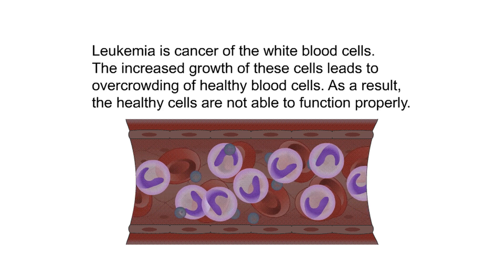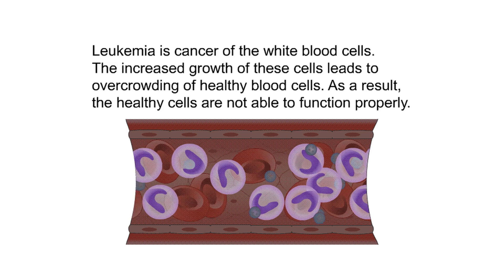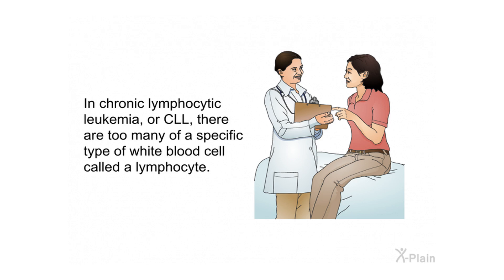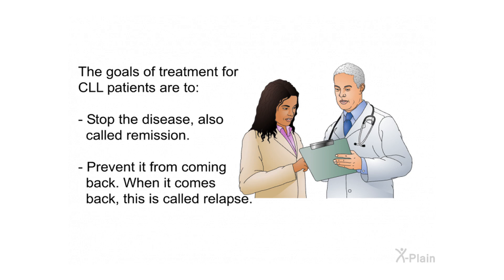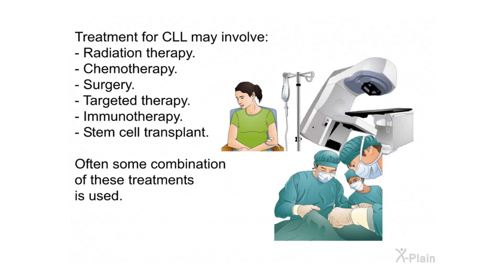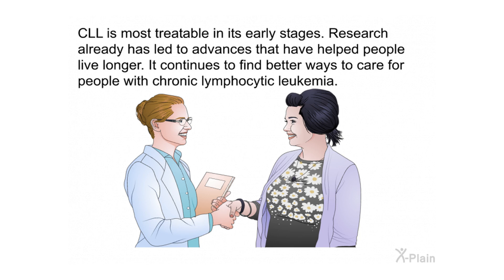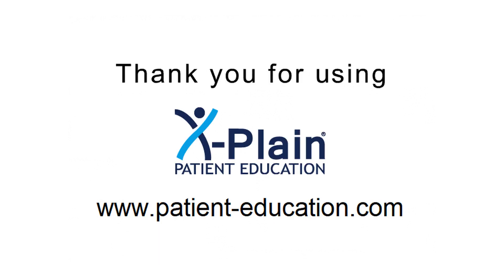In summary: leukemia is cancer of the white blood cells, and the increased growth of these cells leads to overcrowding of healthy blood cells that are not able to function properly. In CLL, there are too many lymphocytes. Treatment goals are remission and preventing relapse, and may involve radiation therapy, chemotherapy, surgery, targeted therapy, immunotherapy, or stem cell transplant — often in combination. CLL is most treatable in its early stages. Research has already led to advances helping people live longer and continues to find better ways to care for people with chronic lymphocytic leukemia.